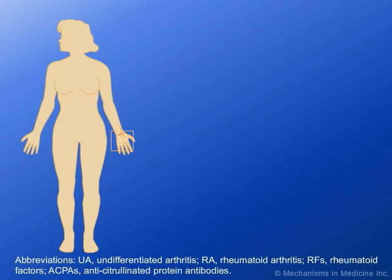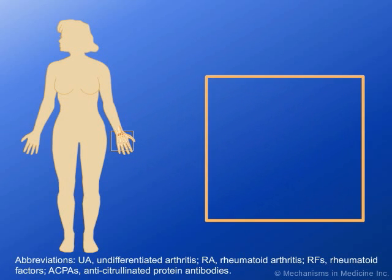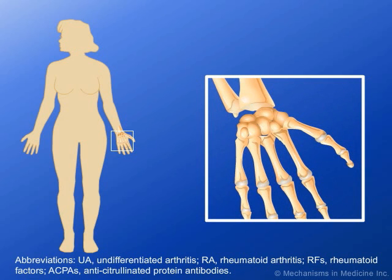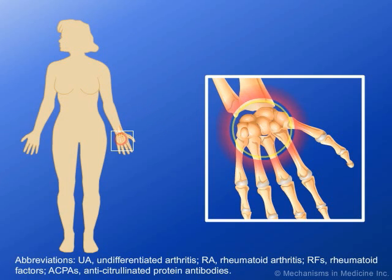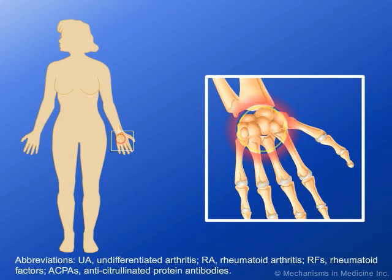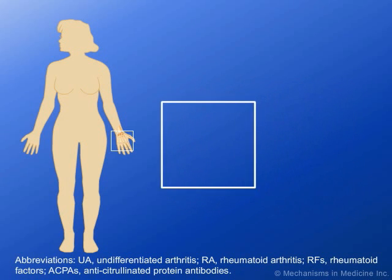In many cases, RFs and ACPAs are serologically detectable in patients prior to the development of RA. RFs readily form immune complexes with ACPAs. This interaction is a key step in allowing pathogenic autoantibodies, such as ACPA, access to the joint for involvement in the synovial inflammatory process.